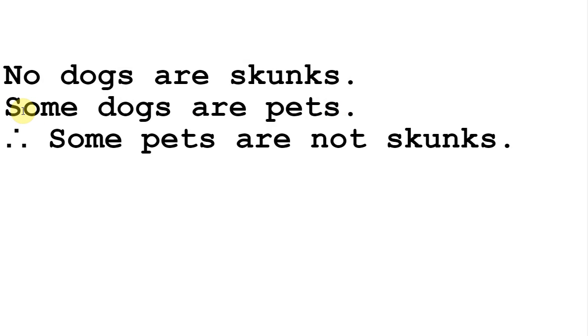Our next premise says 'some dogs are pets.' This is saying that something exists — it's an existential statement — and it's saying there's an intersection between two categories, these being dogs and pets. So in a way, it's the opposite of the previous kind of statement: that one says two categories are mutually exclusive, while this one says there's an intersection between them.